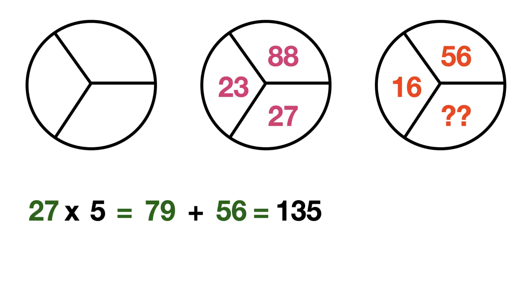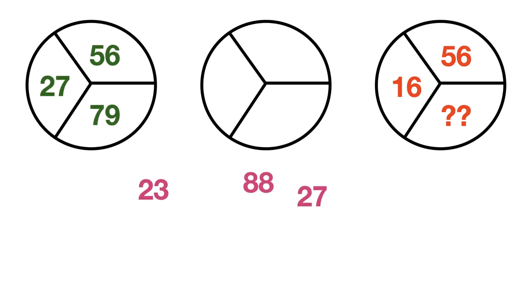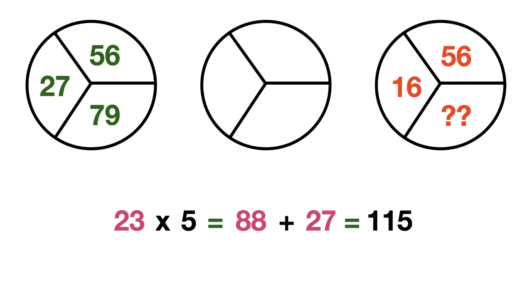This is the logic for this particular problem. So let's consider the second circle. The left number is 23 and sum of other two numbers is 88 plus 27 which is equal to 115. Now multiply the left number, that is 23, with 5 which yields 115, which is nothing but the sum of other two numbers on the right side. So 23 times 5 equals 88 plus 27 which is equal to 115.